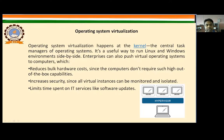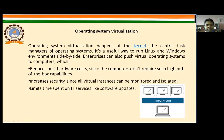The next type is operating system virtualization, which happens at the kernel level. The kernel is the central task manager of an operating system. It is a useful way to run Linux and Windows environments side by side. Enterprises can also push virtual operating systems to computers, which reduces bulk hardware costs since components do not require such high out-of-the-box capabilities. It increases security since all virtual instances can be monitored and isolated, and it limits time spent on IT services like software installations and so on.